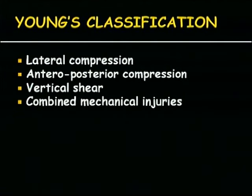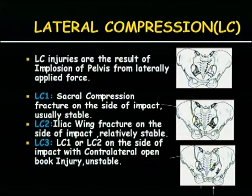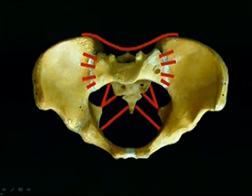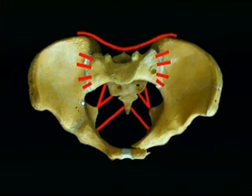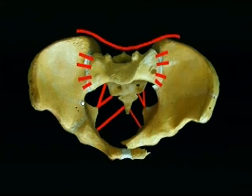Young's classification is the workhorse for pelvic fracture classification: lateral compression (LC), open book, vertical shear, or combined. When there is an impact from the side, you get a lateral compression injury. LC1 is sacral compression on the side of impact and is usually stable. LC2 is an iliac wing fracture and is relatively stable. LC3 is LC1 or LC2 with an opposite-side pelvic injury. On X-ray, you will see the pelvic cavity is narrowed, indicating a lateral compression injury.